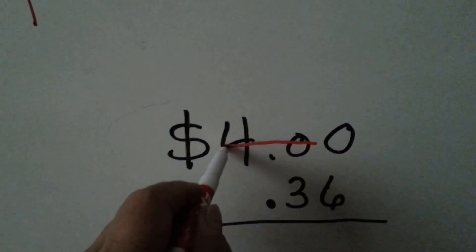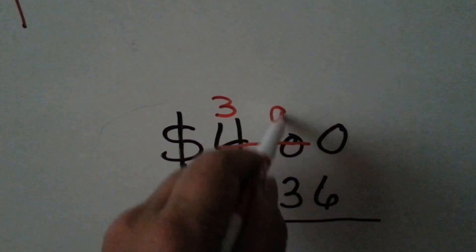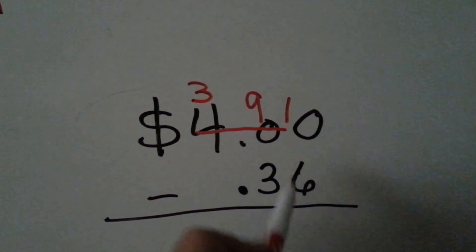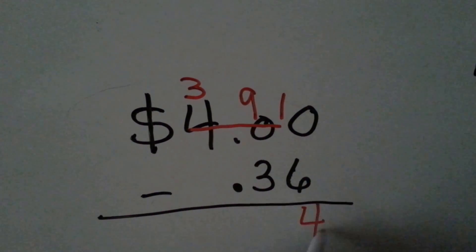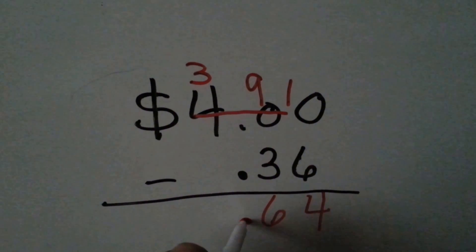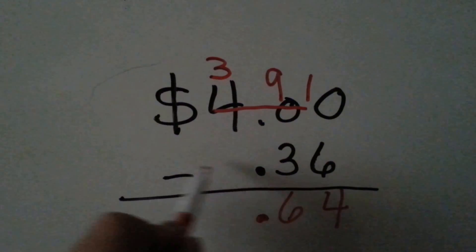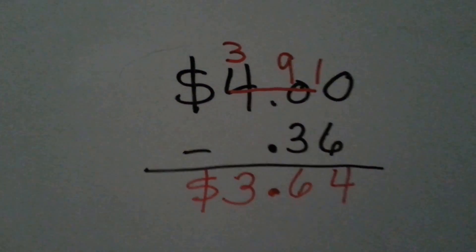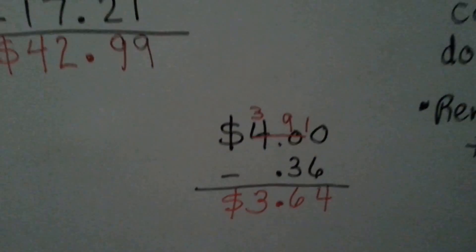You can cross off the four and make it a three point nine nine and add the one to the zero to make it a ten. Ten take away six is four. Nine take away three is six. Remember our decimal point. Three take away nothing is still three. And remember your dollar sign. You would have three dollars and sixty-four cents left over.